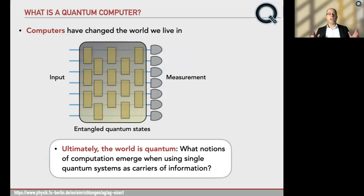So what notions of computation emerge when using single quantum systems as carriers of information, such as single ions, atoms, light quanta. So a quantum computer is just that, a computer with a classical input and a classical output. But in between, one makes use of superposition and entanglement in a clever way, exploiting structure when designing quantum algorithms.